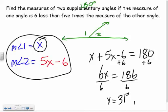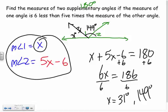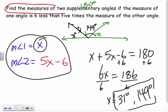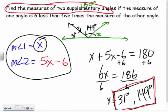Measure of angle two would be 180 minus 31, which is 149 degrees. So the two supplementary angles are 31 degrees and 149 degrees. Always look back at what they're asking for — they wanted both angles, so state both. It's all about bringing in a variable and making an equation.